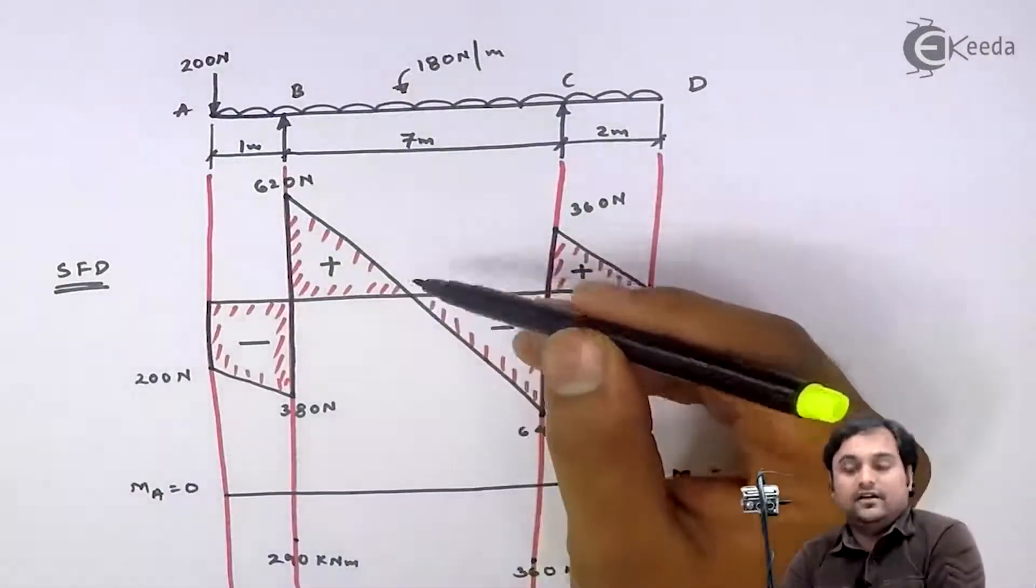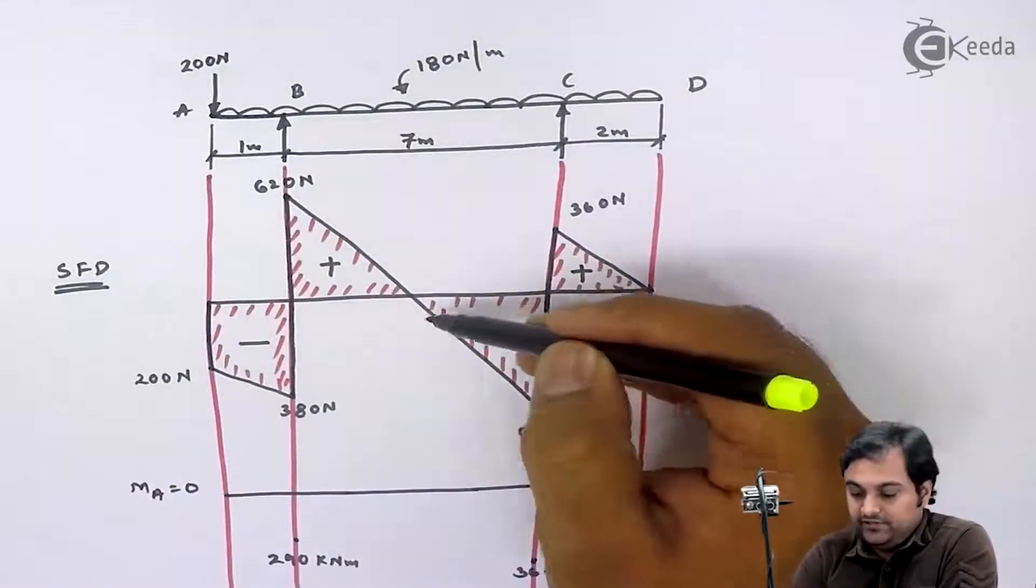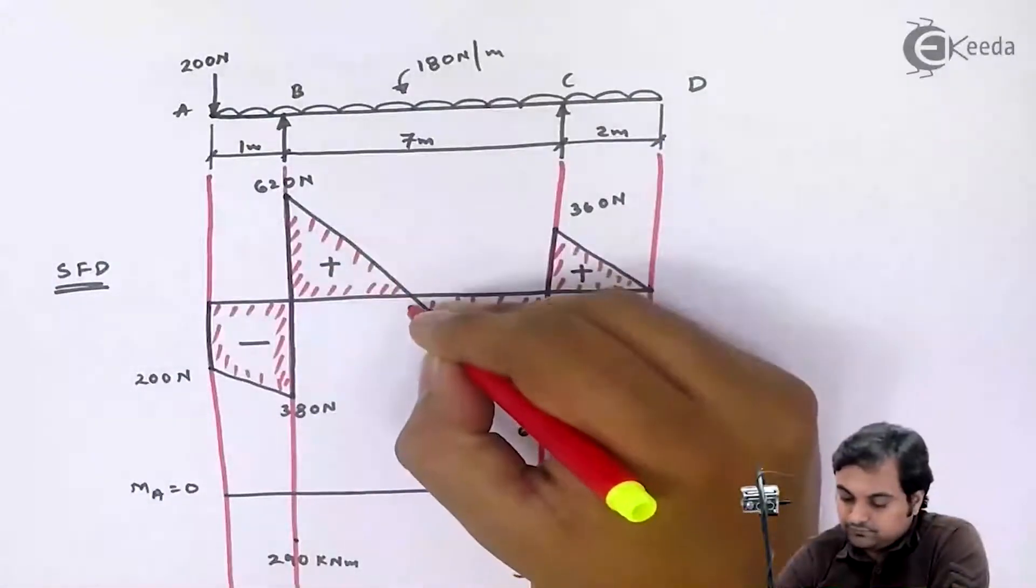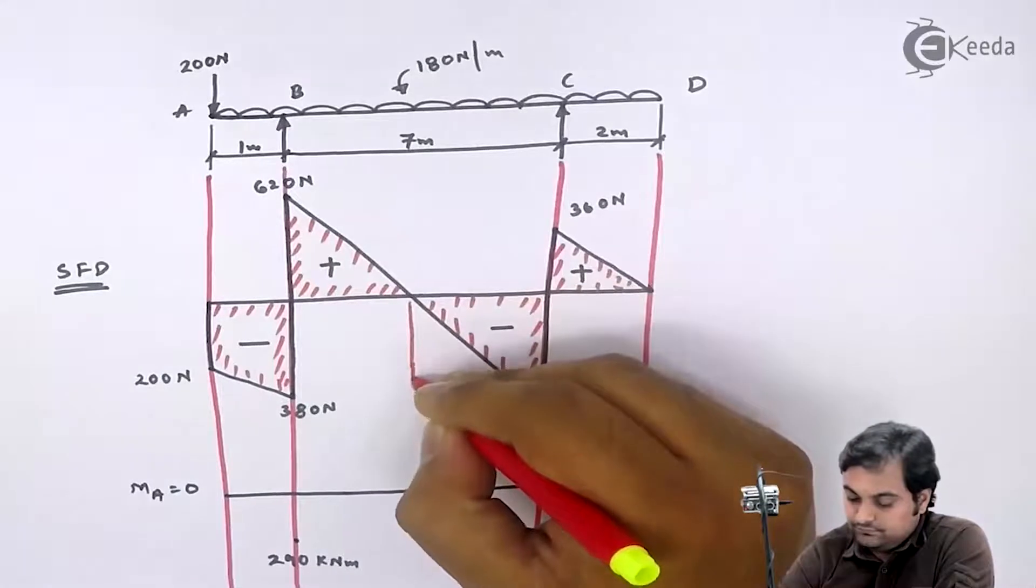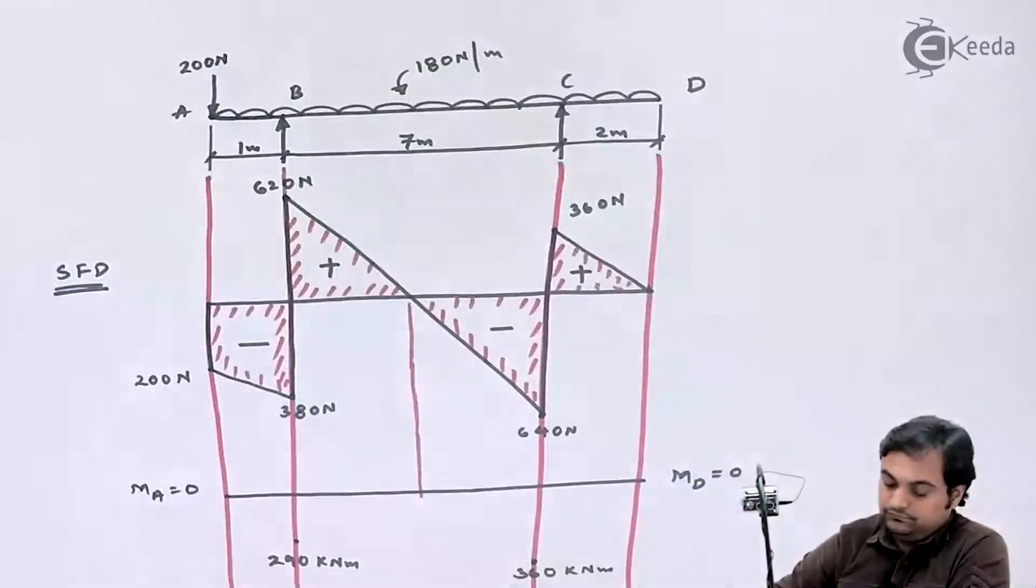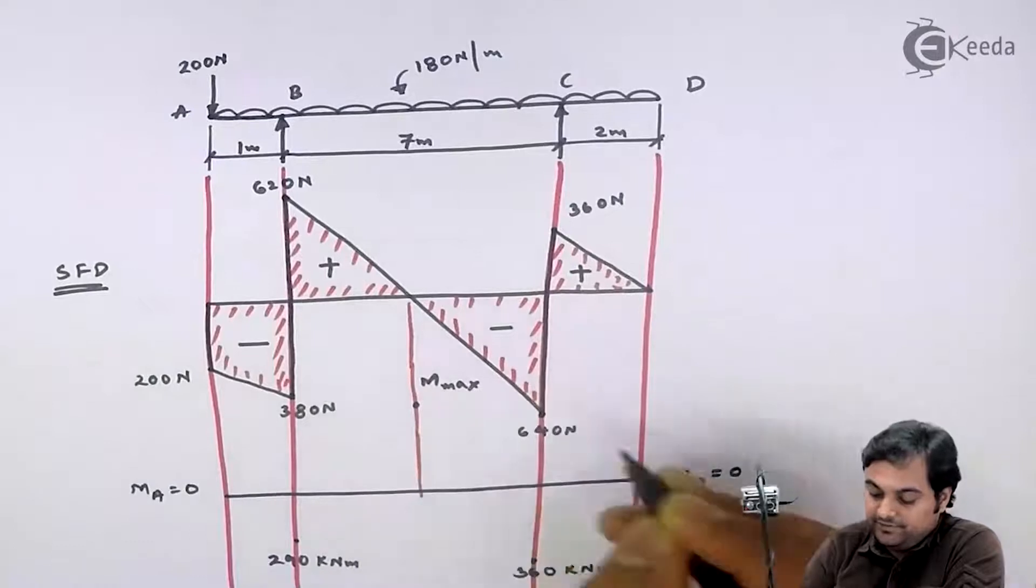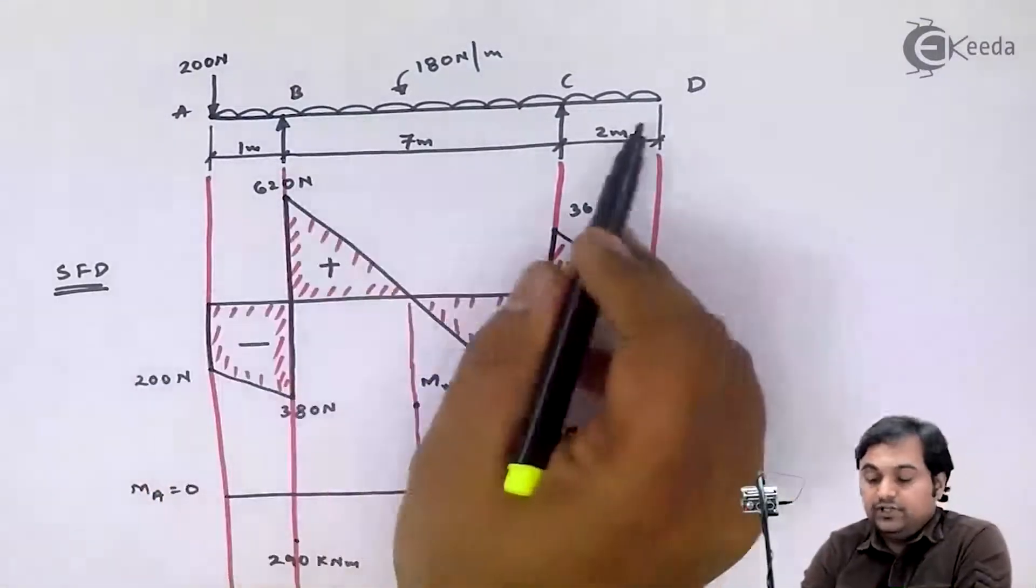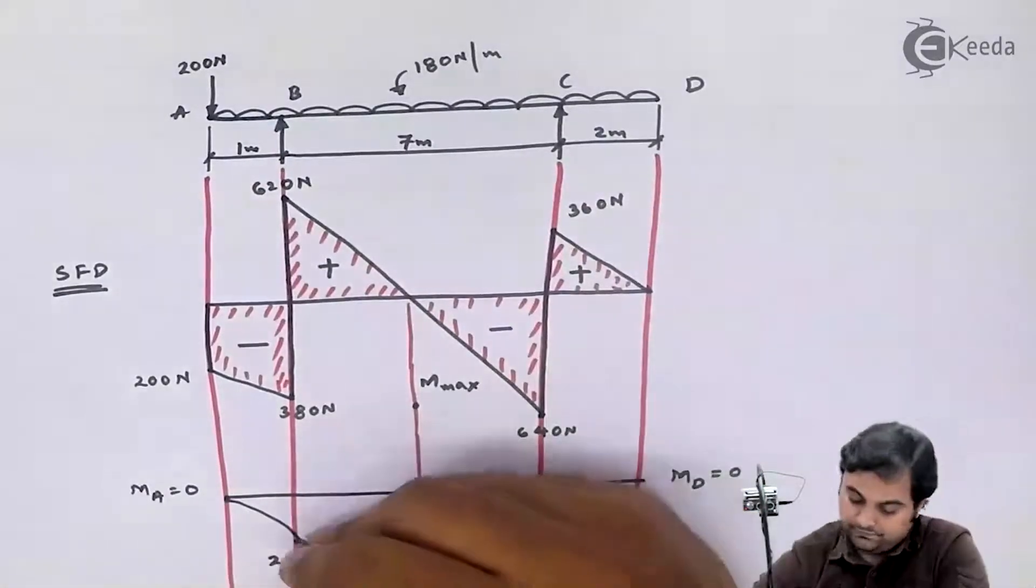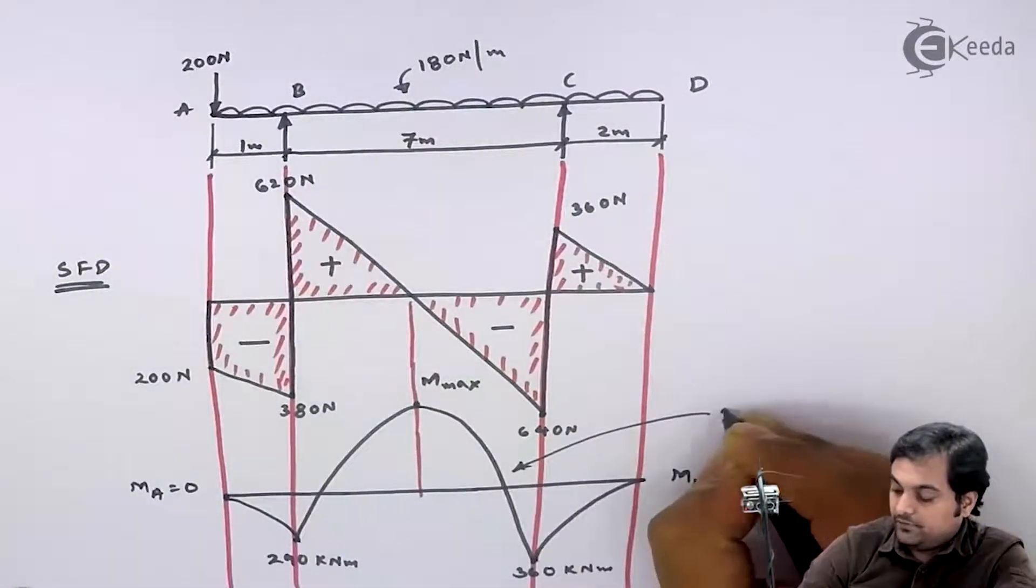Now see, here we have a point in shear force diagram where it is changing its sign from positive to negative. At this point, bending moment will be maximum. I'll write it as M max, maximum bending moment. Since there is UDL throughout the beam, bending moment will be a parabola. I will mention this as parabola throughout.